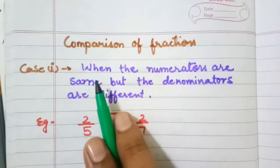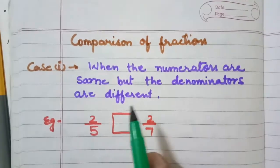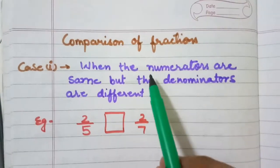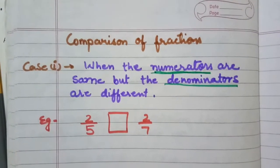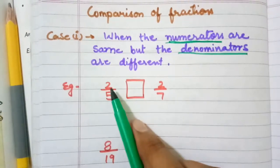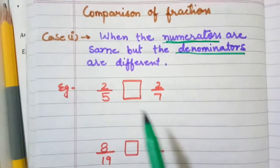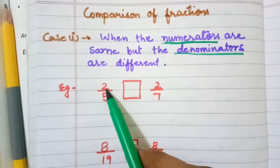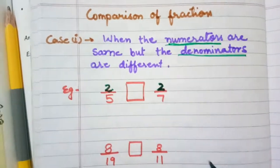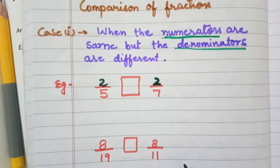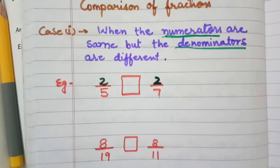Case 1 is when the numerators are same but the denominators are different. Look at the example: here we have two fractions, 2 upon 5 and 2 upon 7. You can see the numerators - numerator is 2 and on your right hand side is also 2. The numerators are same but the denominators are different.